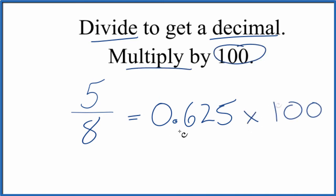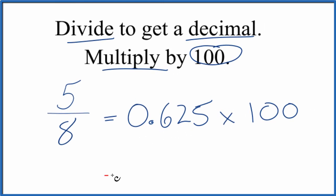Then we multiply that by 100. 0.625 times 100 equals 62.5, and that is our percent. So we're saying that 5 is 62.5 percent of 8. To recap, we divided 5 by 8, got our decimal, then multiplied by 100.